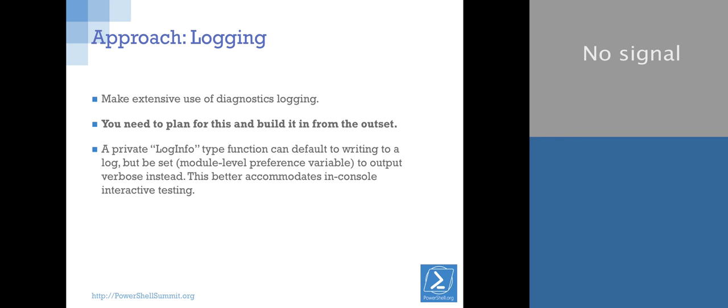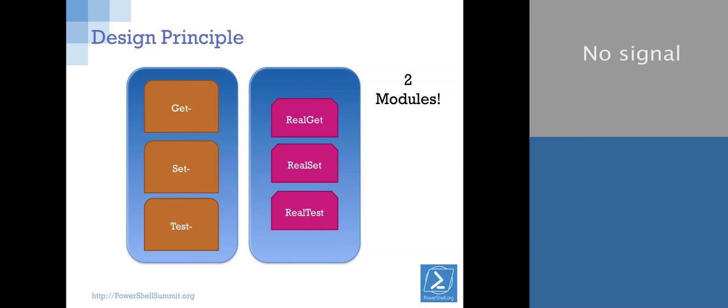Here's the big thing, the design principle: in our heads, we've got our exported functions that DSC needs to see - three of them. Then we've got this huge basket of private getters and setters and a tester. Break that into two separate modules now. Your actual DSC resource module has your exported get, set, test. But then you've got another totally normal PowerShell script module that has all the other stuff.